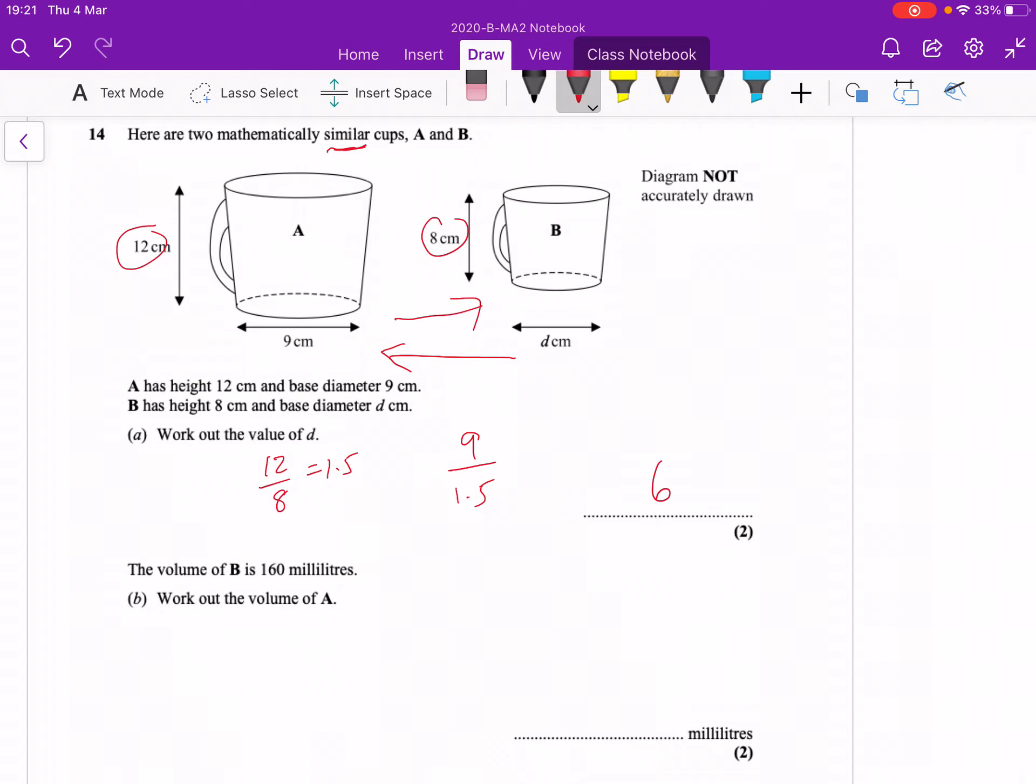Now if we want the difference in the volumes in part B, the volume of B is 160 milliliters. If the length scale factor is 1.5, then the volume scale factor will be 1.5 cubed.